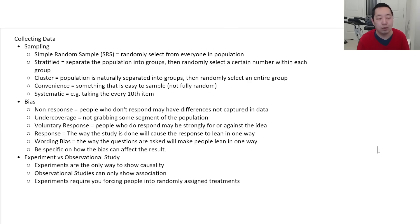Convenience is just something that you do that's easy for you to do. You grab people who are walking into school or you just do something that's not necessarily random or not fully random. Systematic is something like you take every 10th item or every 5th item or something like that. Something you just kind of systematically do for your sampling.